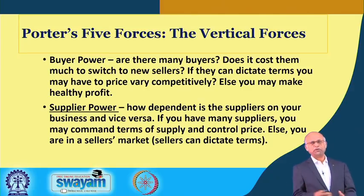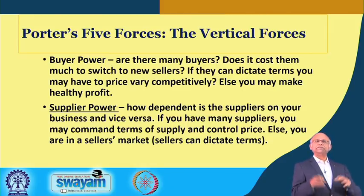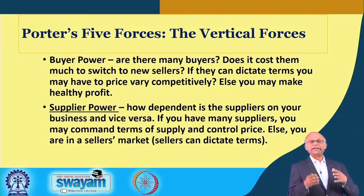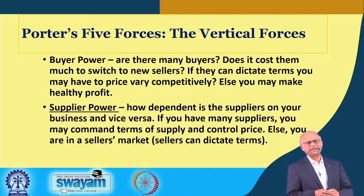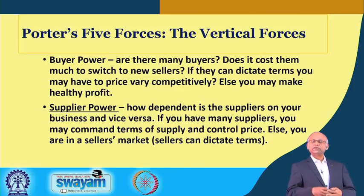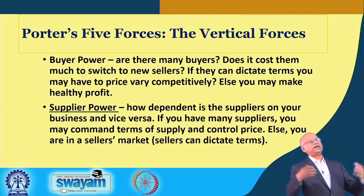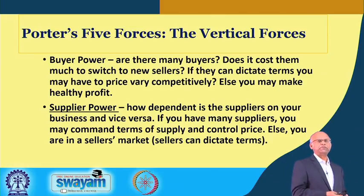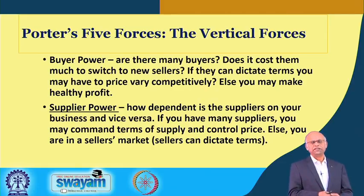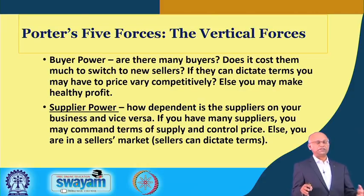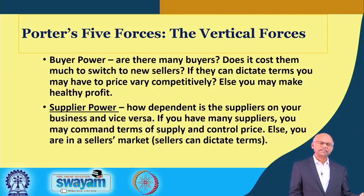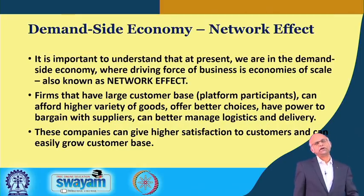The vertical forces are buyer power and supplier power. If there are many buyers, you have unique power. But if there are fewer buyers and more sellers, you are in a buyer's market — buyers dictate the terms and you become a price taker. If they can dictate terms, you may have to price very competitively, reducing your margin. Supplier power: if there are many suppliers, you have the choice to buy from any and dictate price. But if there are fewer suppliers, they have the option to supply to you or your competitors, so they will dictate the price.